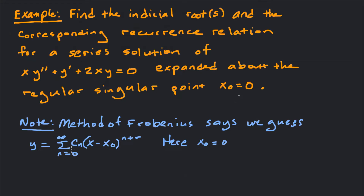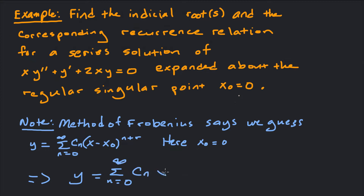The Frobenius solution is the series from n equals 0 to infinity of cₙ times (x minus x₀) to the n plus r. Here x₀ equals 0, so our series solution guess is y equals the sum from n equals 0 to infinity of cₙ x to the n plus r. We're going to differentiate that twice, plug it all in, and find the recurrence relation for the power series and the indicial roots — those are the r values we find.